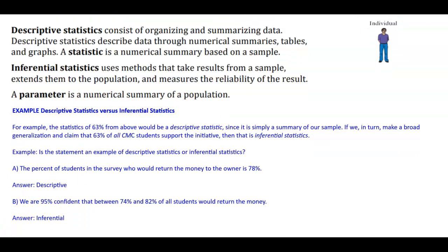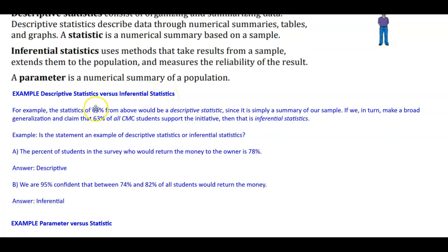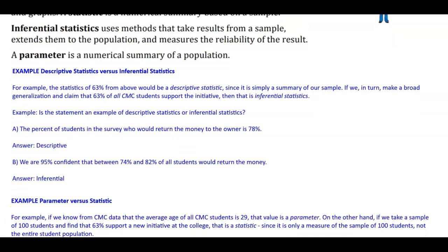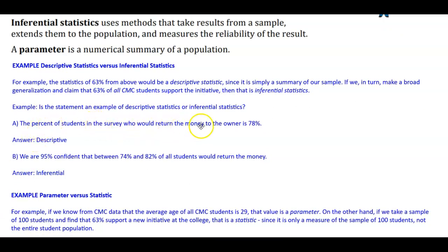For example, a figure of 63% from a survey of CMC students would be a descriptive statistic since it is simply a summary of our sample. If we then make a broad generalization and claim that 63% of all CMC students support the initiative, that is inferential statistics. Here's another example: the percent of students in a survey who would return the money to the owner is 78% — that's descriptive. Saying we are 95% confident that between 74 and 82 percent of all students would return the money — that is inferential.